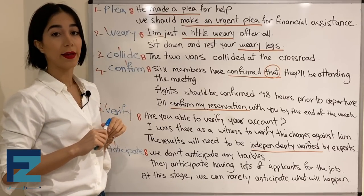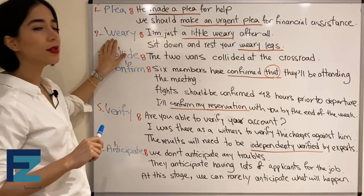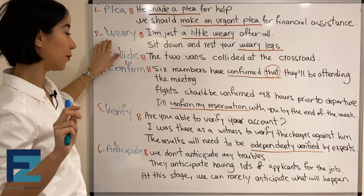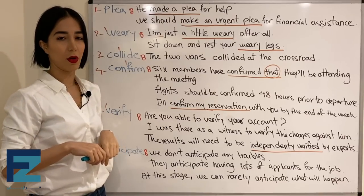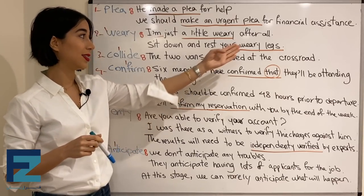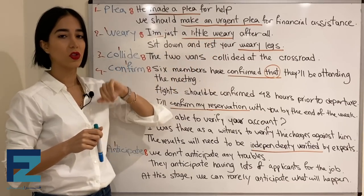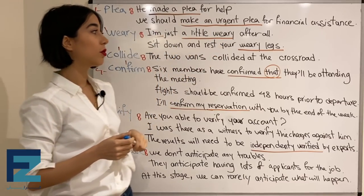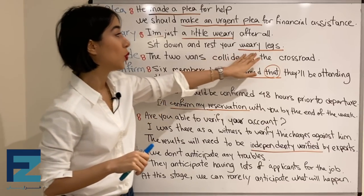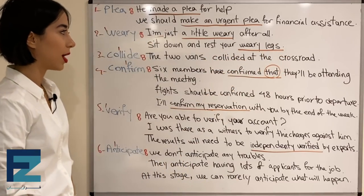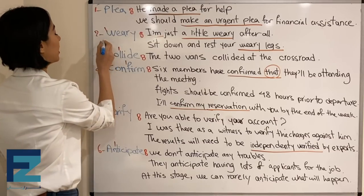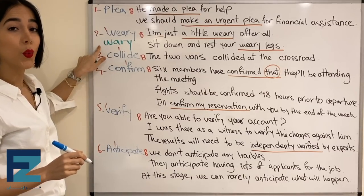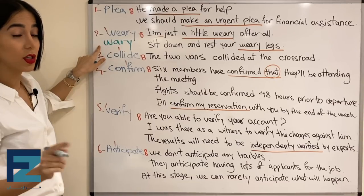Number two: weary. Weary means tired. It has two syllables and the stress is on the first syllable. For example: 'I'm just a little weary after all.' یعنی من بعد از این همه فقط یک کوچولو خستم. 'Sit down and rest your weary legs.' این لغت توی درس قبلی 504 بود — تلفظش weary هست نه very.